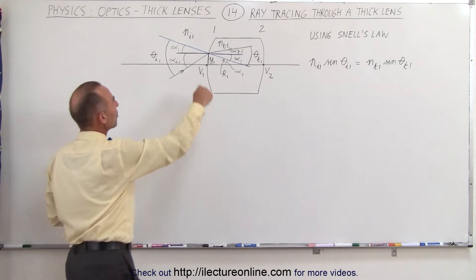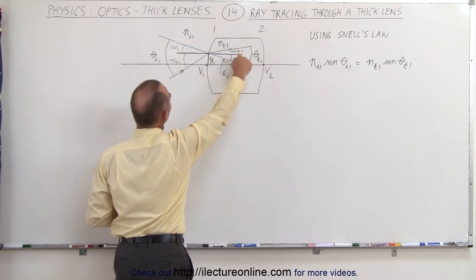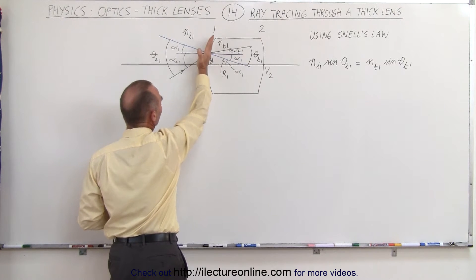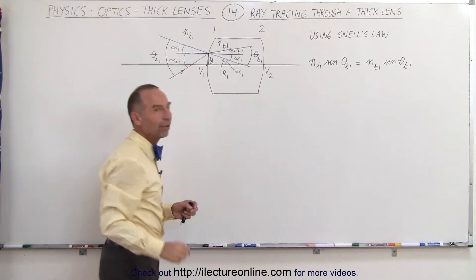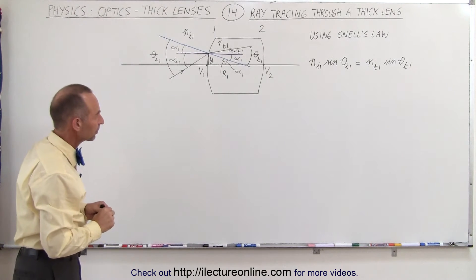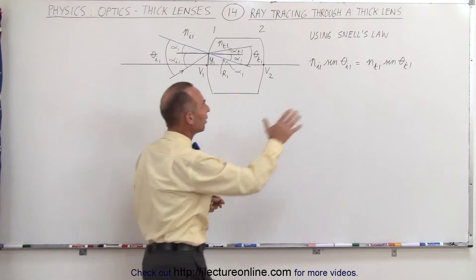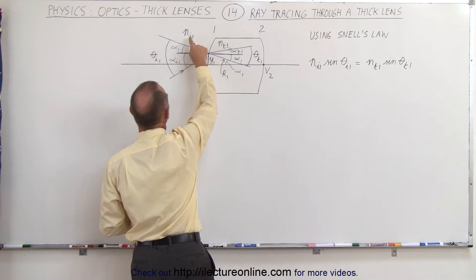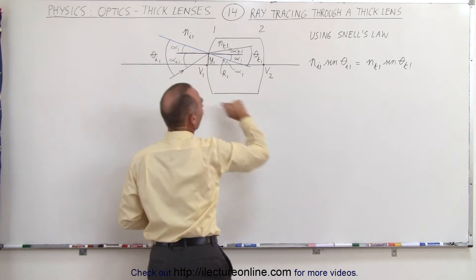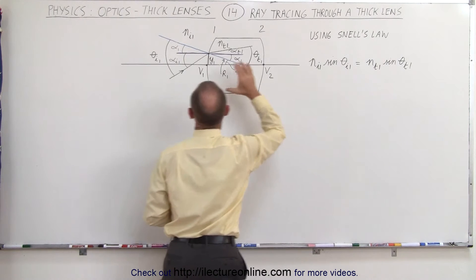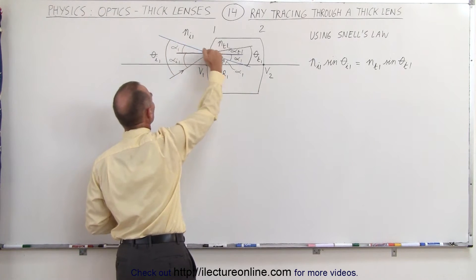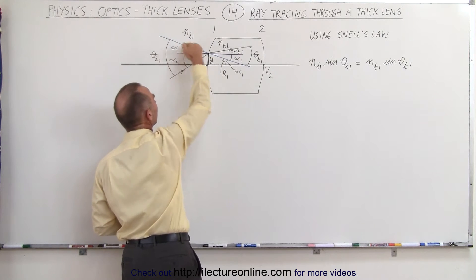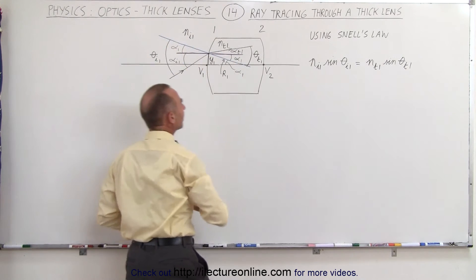We've drawn a horizontal line in purple and a blue line which is perpendicular to the surface, or normal to the surface at the point of incidence. We're also going to be using Snell's law, where the index of refraction on the incident side times the sine of theta — this theta on the incident side is relative to the normal — so this is the ray and here's the normal line, so we use the angle theta.